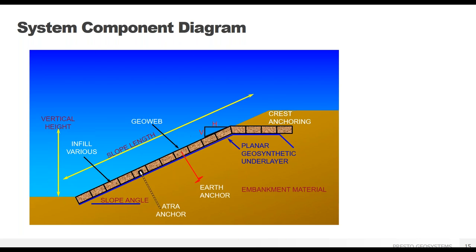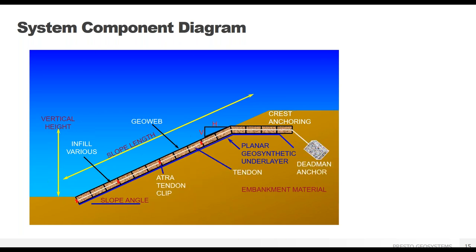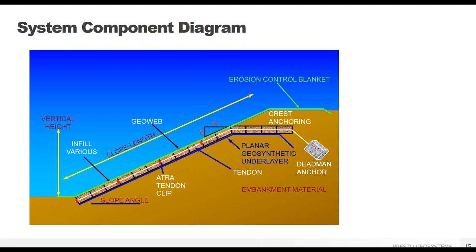We have two options for anchoring. One is using stakes or anchors, placed mid-slope and at the crest — the number and spacing of stakes is project dependent. The other option is to use tendons and a dead man, with the dead man being a buried pipe, concrete anchor, or earth or rock anchors at the crest. The GeoWeb is then filled with the desired infill material, and if vegetated, an erosion control blanket is used until vegetation is established.